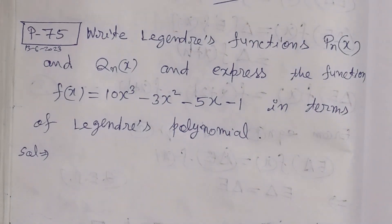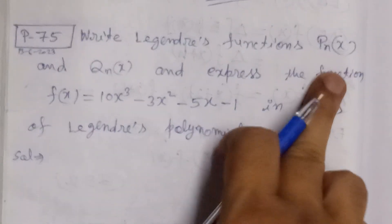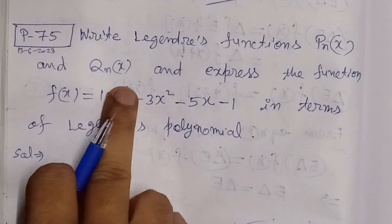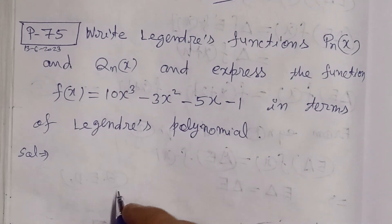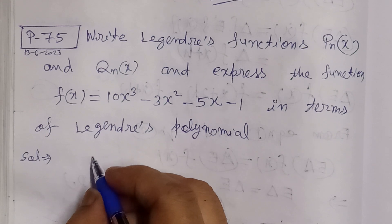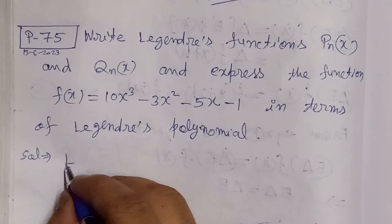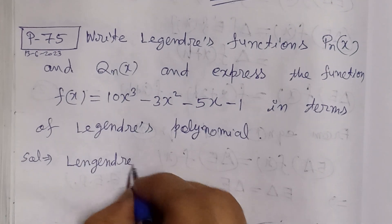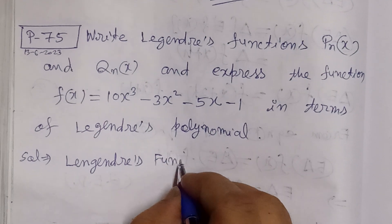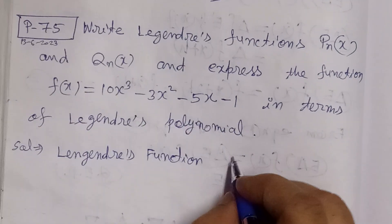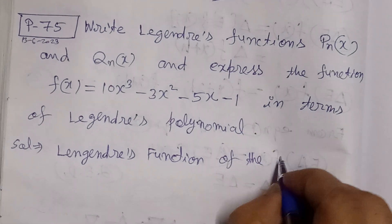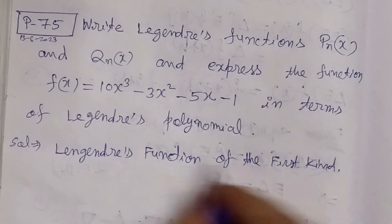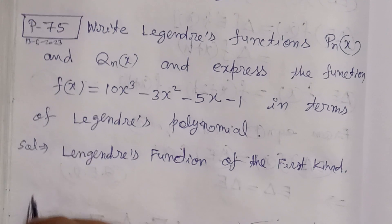So first we have here Legendre function or Legendre polynomial. Pn(x) or Qn(x), as called in the book. We write the value, Pn is called Legendre's function of the first kind, and it's called Legendre polynomial.